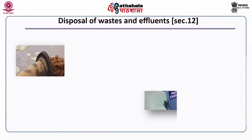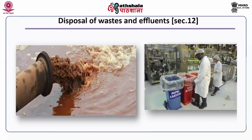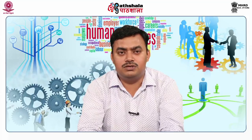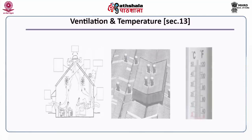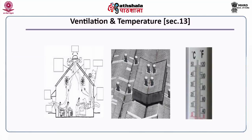Under Section 12, disposal of wastes and effluence: there should be proper arrangements for disposal of waste and effluence, and the state government can frame rules in this regard. Under Section 13, ventilation and temperature: a proper level of ventilation, temperature and humidity must be maintained, and provisions should be made for reducing excess heat.